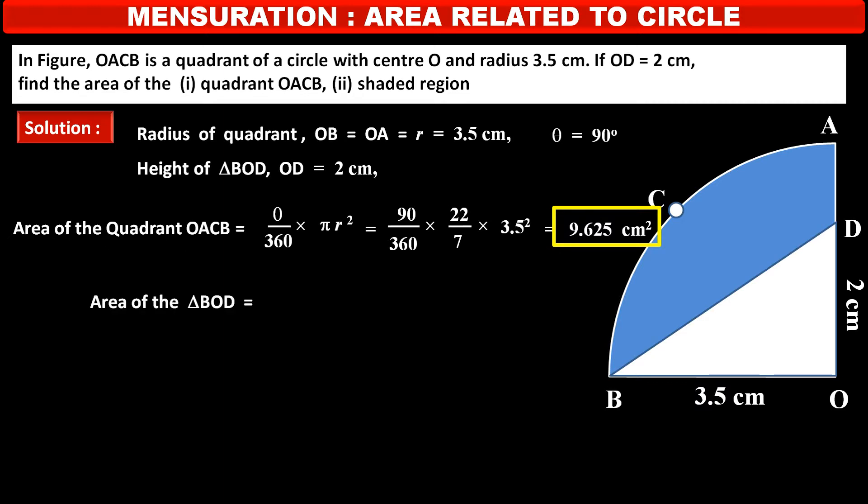Now, we have to find area of the triangle BOD. It is a right angle triangle, so its formula is half into base OB into height OD, which is equal to half into 3.5 into 2 cm. Solving this we get 3.5 cm square. This is the area of right angle triangle BOD.